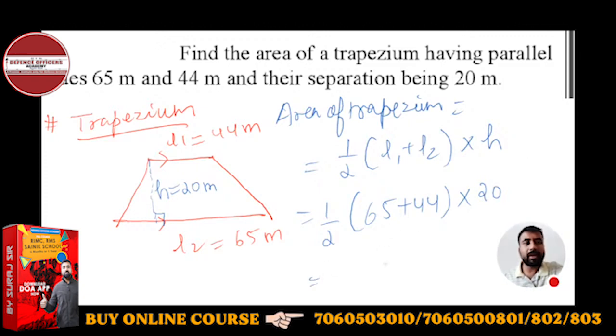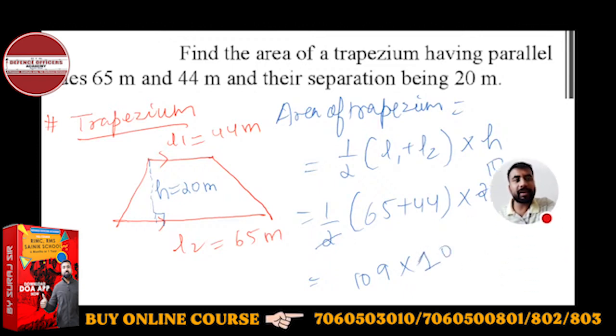So this will be 109 into 10 into 10, which will be nothing but 1090 meter square. Very simple, to the point.